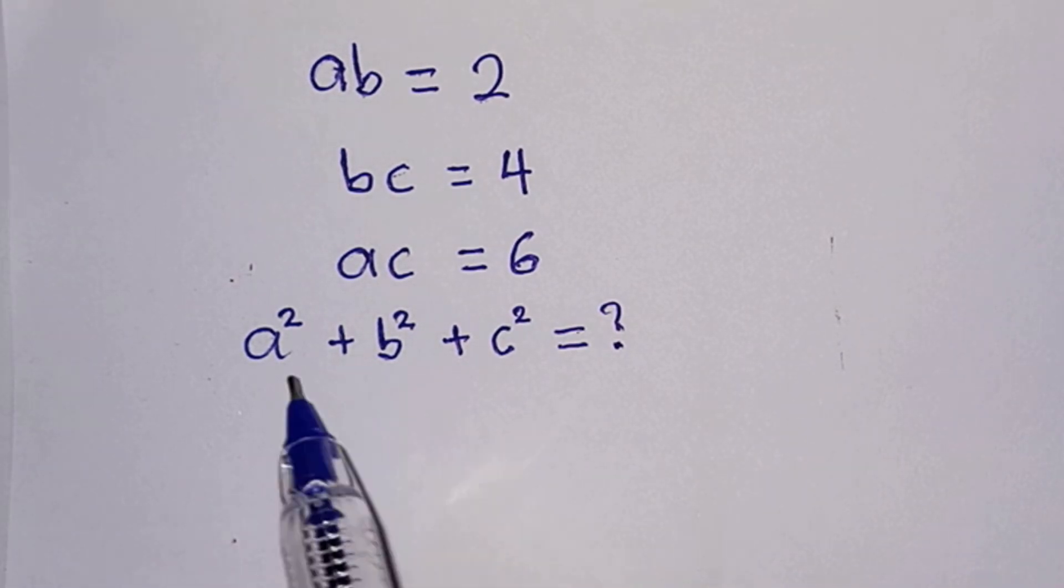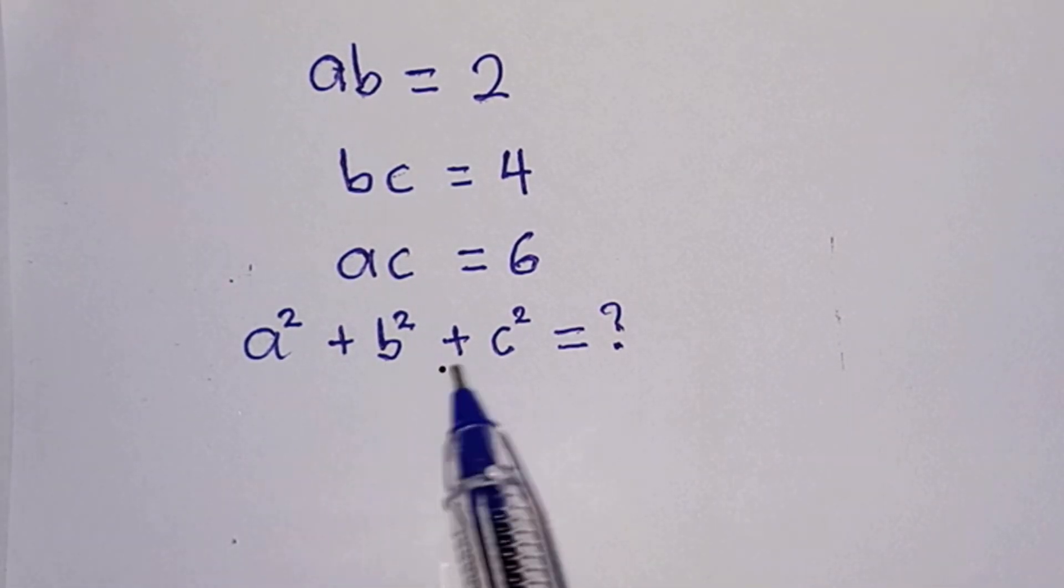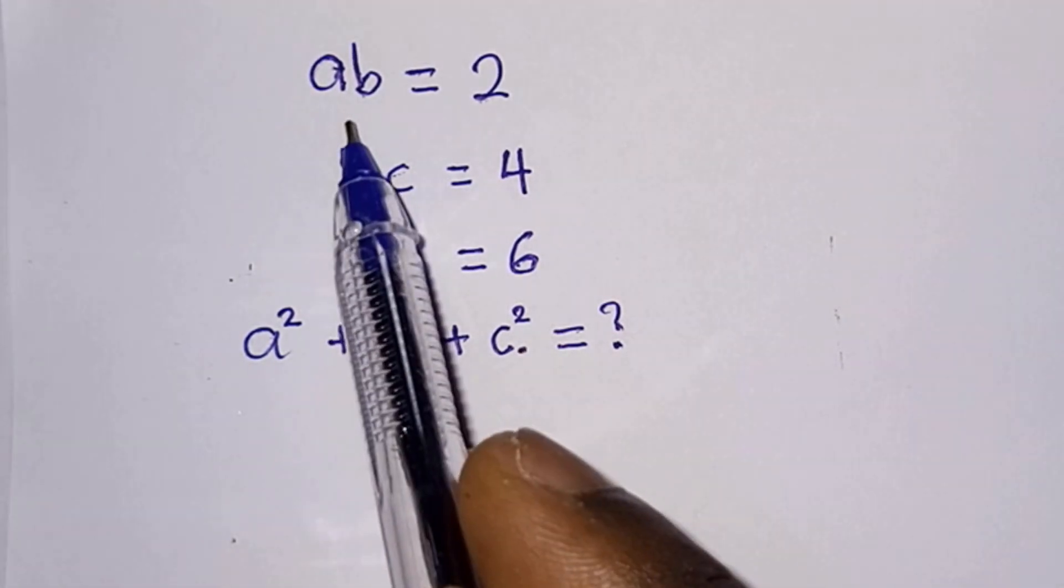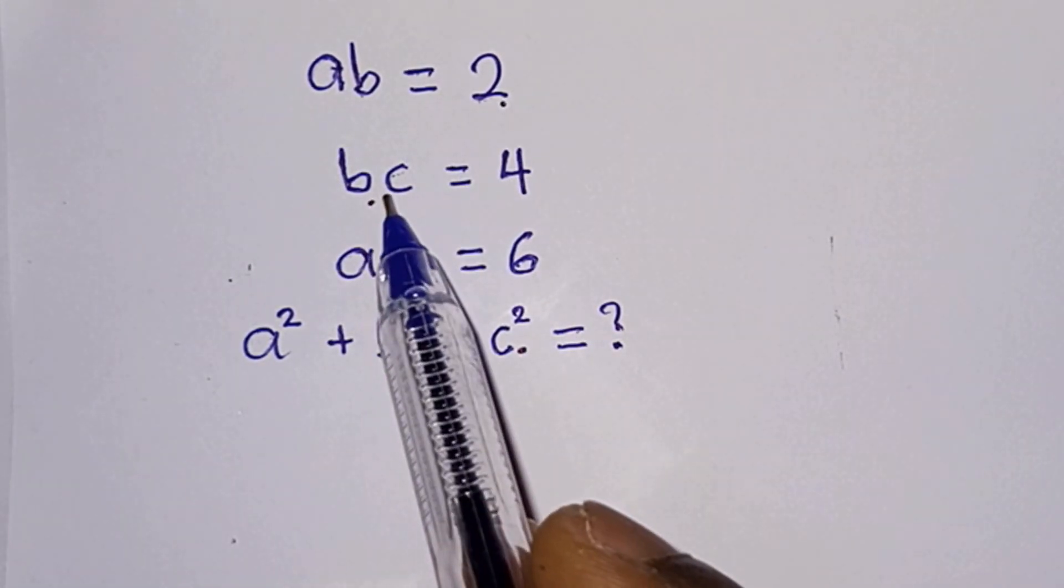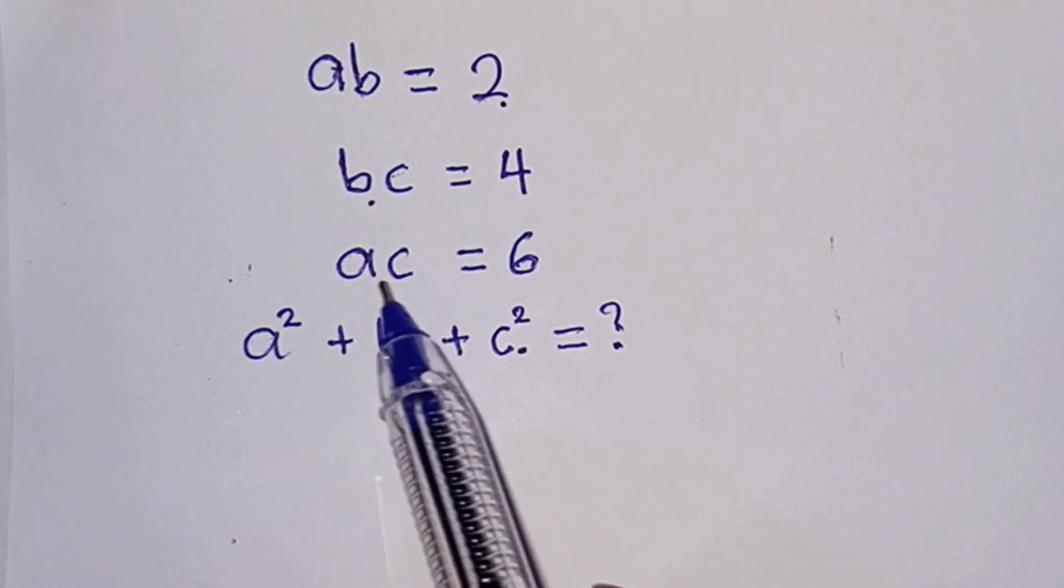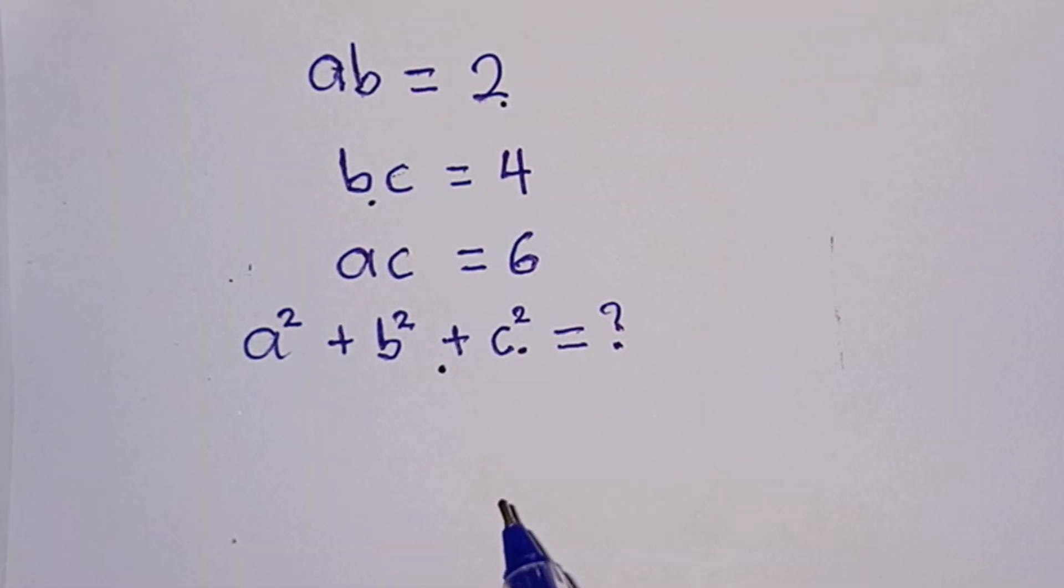Hello everyone! What is the value of a² + b² + c² given that ab = 2, bc = 4, and ac = 6? Let's get started.